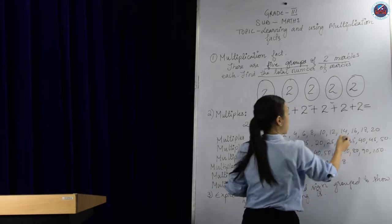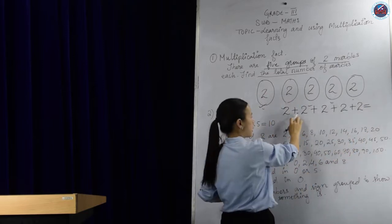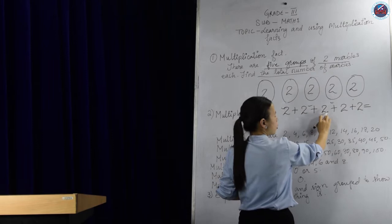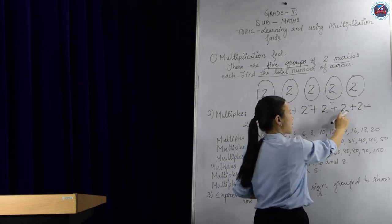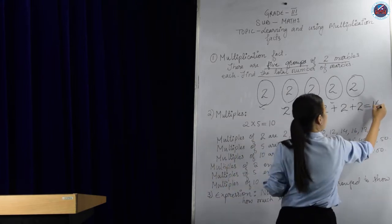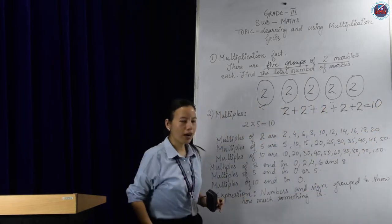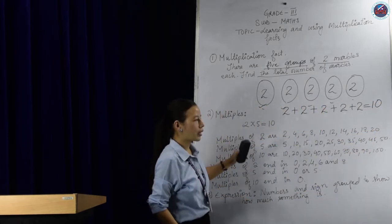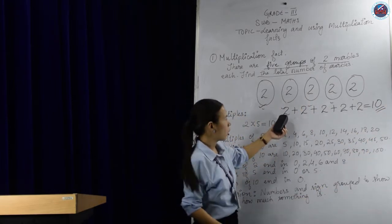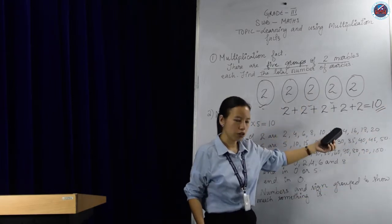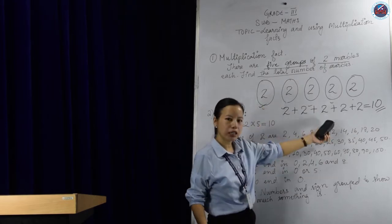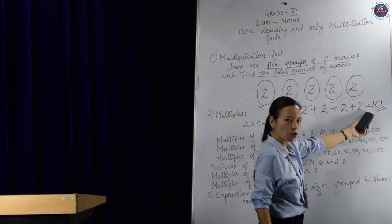Now let's add it. 2 and 2, that is 2 plus 2 more, you get 4. 4 and 2 is 6. 6 and 2 is 8. And 8 plus 2 is 10. That means altogether we have 10 marbles. So that's how we can use what is called repeated addition — to find the answer, we can use the repeated addition method to get our total.